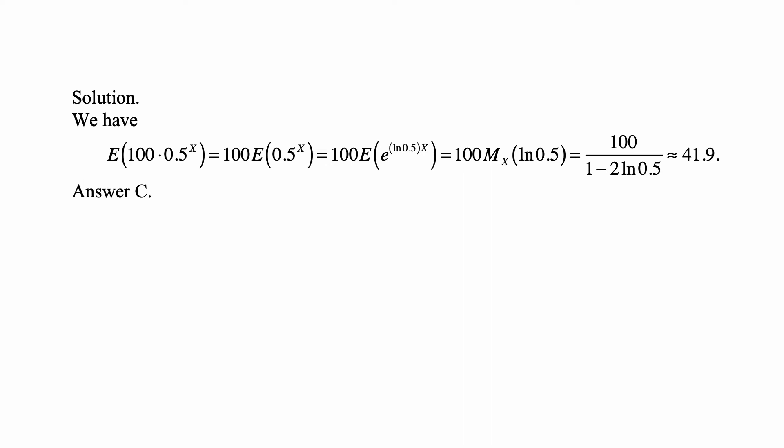It's 100 times, and we simply take the moment generating function that we are given and plug in ln(0.5) into the formula. So this becomes 100 times 1/(1 - 2·ln(0.5)). And now it's just the calculation.